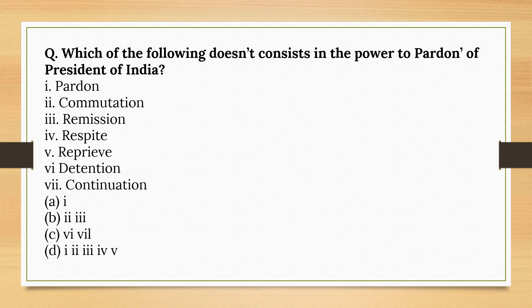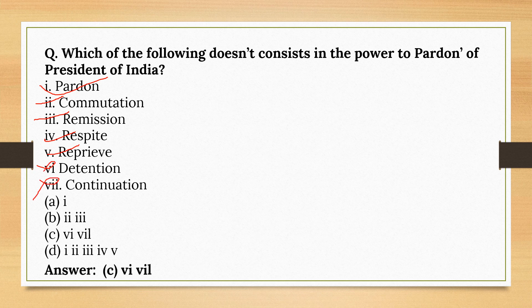Which of the following does not consist in the pardon powers of the President of India? Pardon, commutation, remission, respite, and reprieve are all part of the President's pardon powers. However, detention and continuation are NOT part of these powers. So the correct option is Option C.